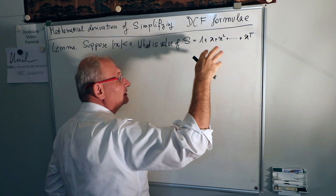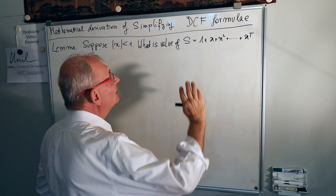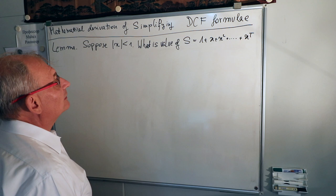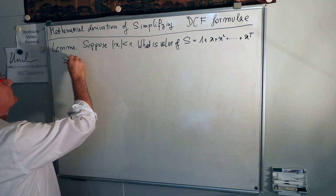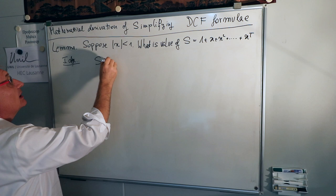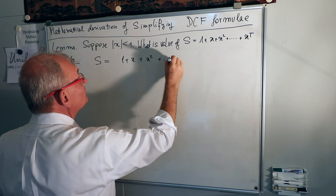You can already recognize a bit of the DCF formula here: 1 divided by (1+r), (1+g) to the power t divided by (1+r)^t. So this geometric structure appears in that formula — that's the intuition. The idea is to rewrite S until you get the illumination. S equals 1 plus x plus x squared plus ... plus x^t.